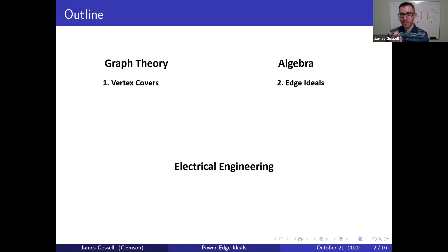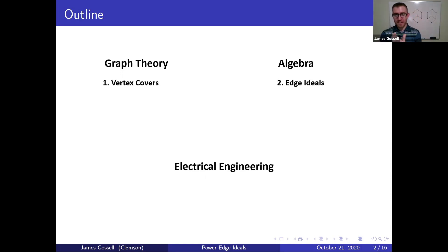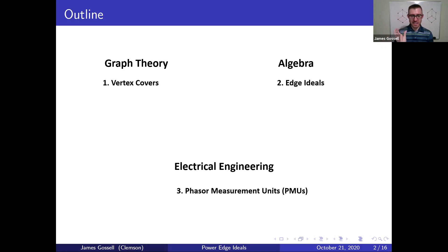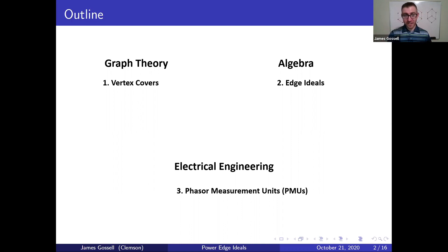After that, we're going to talk about edge ideals, which are basically a way to take a graph and think about a polynomial ring. It turns out that the algebraic properties of edge ideals are very closely related to the combinatorial properties of the graph. In particular, if you can find the minimal vertex covers of the graph, you can use that information to talk about edge ideals.